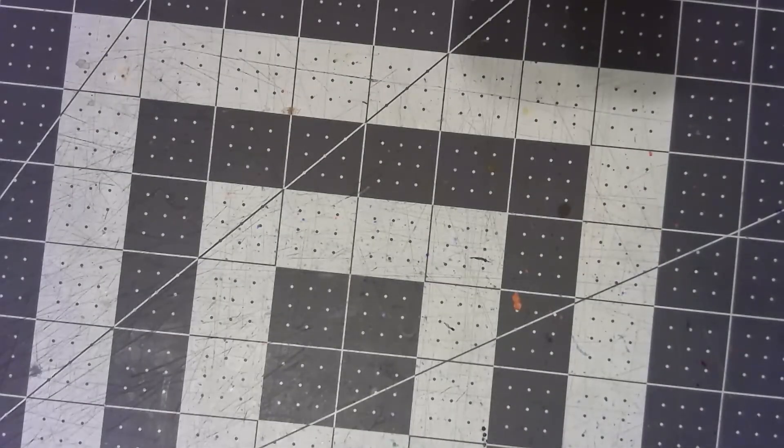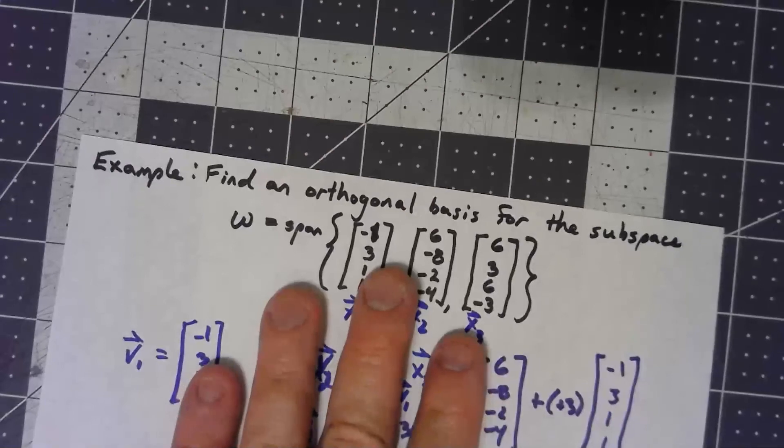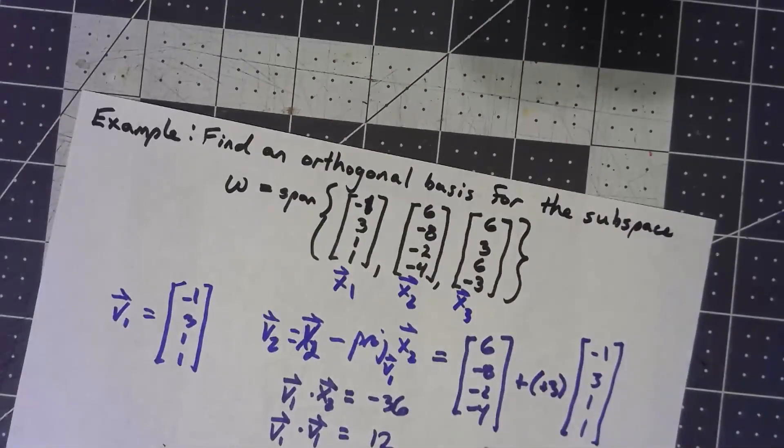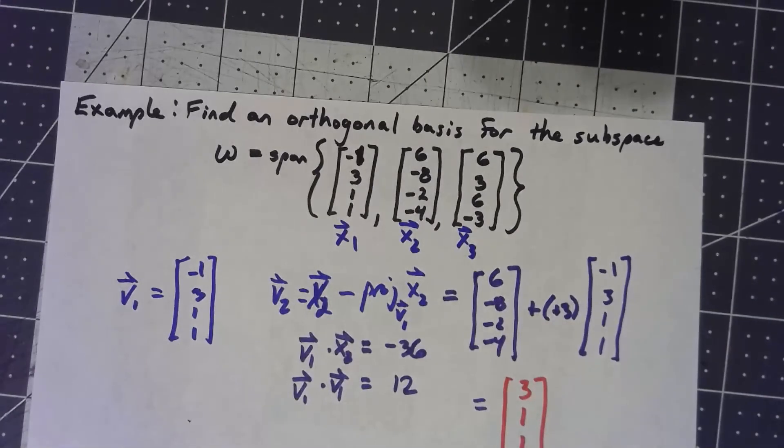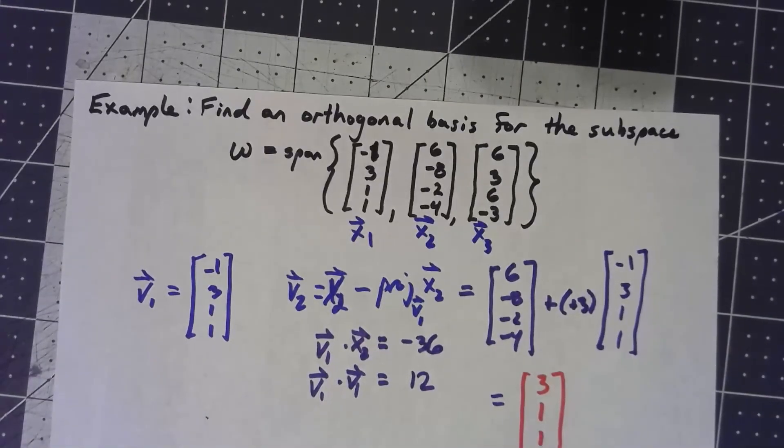One final note, we said that an orthogonal basis is important, but that an orthonormal basis is even better. How can I do that? Well, that's easy. Once I've got an orthogonal basis, all I need to do is divide each vector by its magnitude.